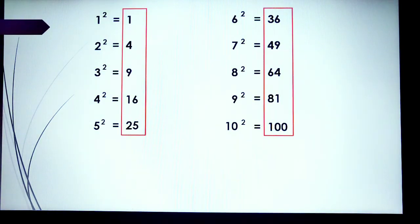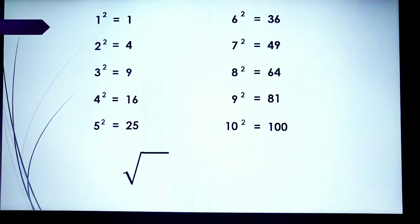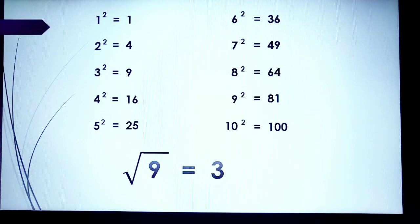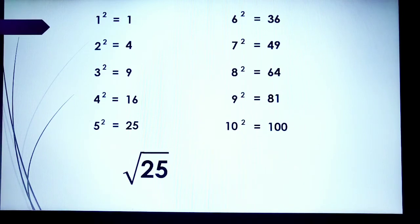These numbers are the squares of the given numbers, and they have perfect square roots. The square root of 1 is equal to 1. Square root of 4 is equal to 2. Square root of 9 is equal to 3. Square root of 16 is equal to 4. Square root of 25 is equal to 5, and so on.